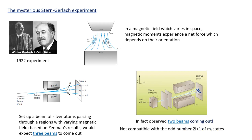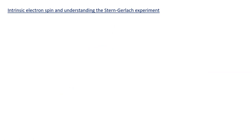Two beams came out from the silver oven — a collimated beam of silver atoms produced two separate deflections. This was very mysterious and not compatible with the odd number of m_l states we'd come to expect. For l = 0 we have one m_l state; for l = 1 we have 2×1+1 = 3; for l = 2 we have 2×2+1 = 5; and so on — always an odd number. We cannot get an even number of m_l states if l is an integer.